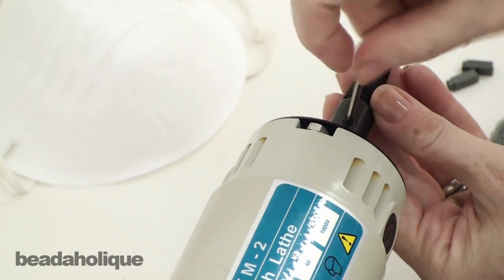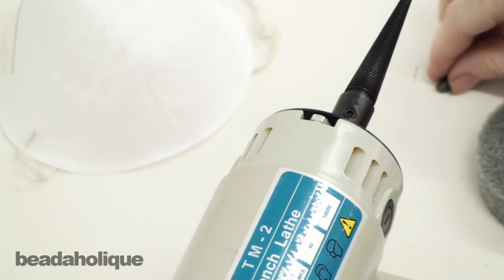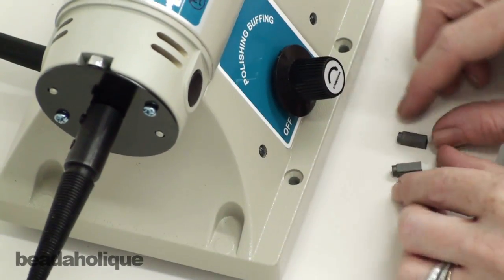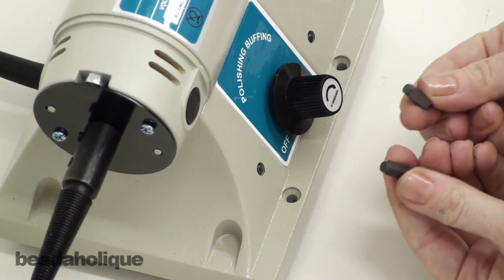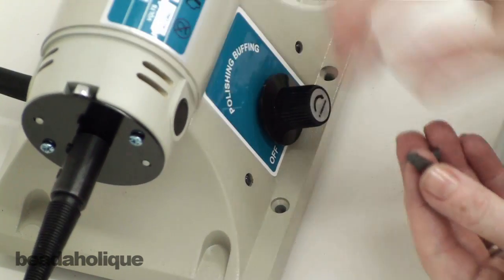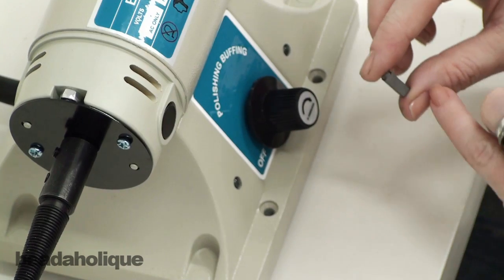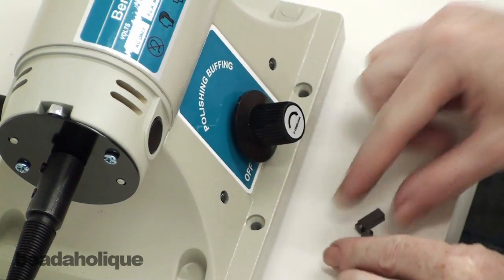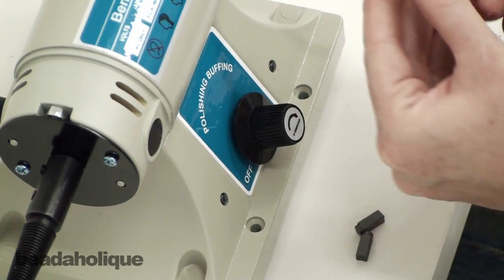Now one thing I want to show you before I go any further is you also get these two little guys. These are motor brushes, and these are replacement pieces. You're not going to use them right off, but after about a hundred hours of continuous use on this, you will need to replace these when they get down to about a fourth of an inch.